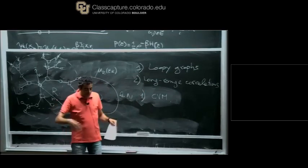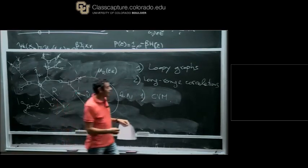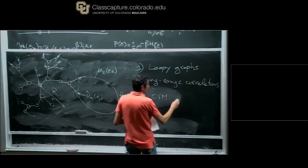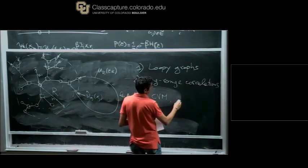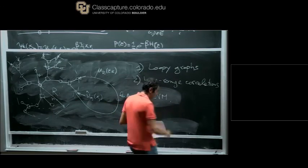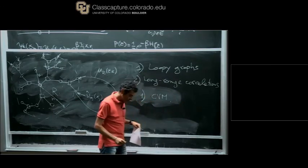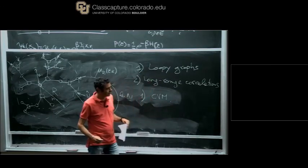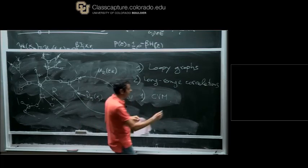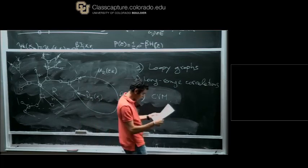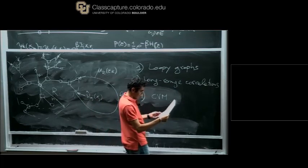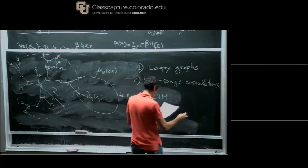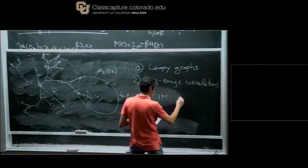The second reason BP fails is long-range correlations: even on a random graph without short loops, long loops of order log N exist. If long-range correlations arise, the assumption that boundary variables are independent breaks down. We then need a new approach — replica symmetry breaking — to describe the joint probability distribution correctly, which is what the remaining lectures will cover.